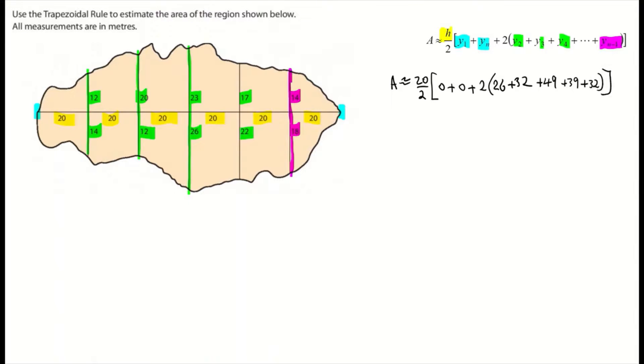So that's my formula filled in. So my approximate area is going to equal to 20 divided by 2, which is 10, times 0 plus 0 is 0 plus 2 times. Again, follow your rules of BIMDAS here. Don't add the 0 to the 2. And when I add 26, 32, 49, 39 and 32 together, I'm getting 178.